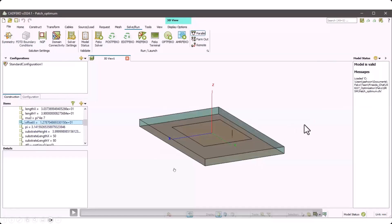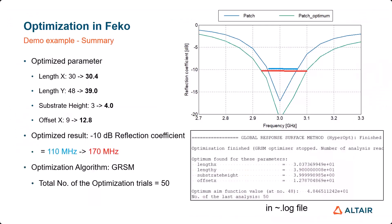That covers all the process. This is the optimization summary. The optimization parameters changed as follows: length X from 30 to 30.4 — very small effect on antenna impedance bandwidth; length Y from 38 to 39; substrate height from 3 to 4; and offset X from 9 to 12.8. The optimized result shows the minus 10 dB reflection coefficient bandwidth improved from 110 to 170 MHz, using the GRSM optimization algorithm. The total number of optimization trials can be checked from the log file.